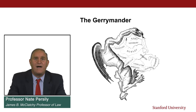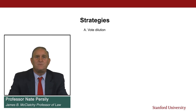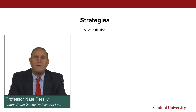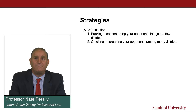The moniker was born, and now we use the word gerrymander to describe all kinds of efforts to use the redistricting process to discriminate against identifiable political groups. There are many strategies to minimize the votes of particular groups. When it comes to vote dilution, you can dilute the votes of your political opponents in several ways. First, you can pack them — concentrating your opponents into just a few districts. Or you could crack them by spreading your opponents among many districts so that they won't be majorities in any of them. You can also engage in what's known as stacking.